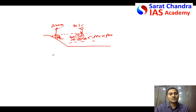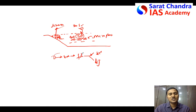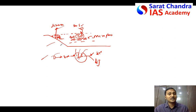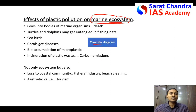You can draw a biomagnification diagram: water is consumed by zooplanktons, zooplanktons are consumed by small fish, small fish are consumed by big fish or seabirds. Plastic from water enters zooplankton, then fish, then seabirds — showing how biomagnification occurs. Bioaccumulation within the same organism can also happen. Draw diagrams only when they create value to your answer. A diagram that makes the answer easier for the evaluator is what I call a creative diagram.